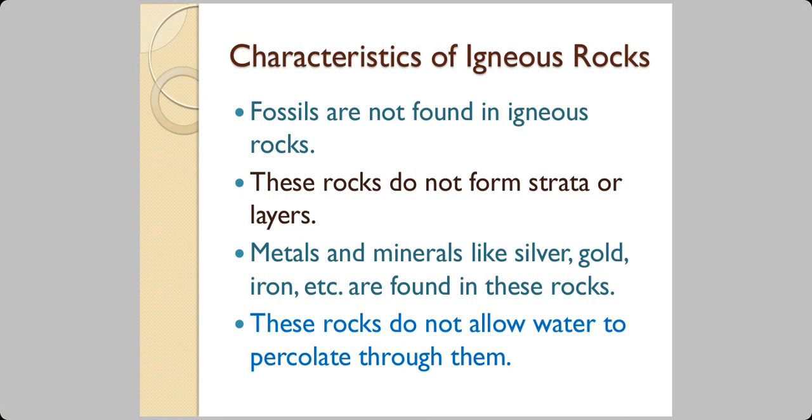The characteristics of igneous rocks are: fossils are not found in igneous rocks. The reason is because at such high temperatures, if any plant or animal material goes below the surface of earth, it will burn. It will get converted into ashes. These rocks do not form strata or layers. Metals and minerals like silver, gold, iron and copper are found in these rocks. And these rocks are waterproof. They do not allow water to percolate through them.